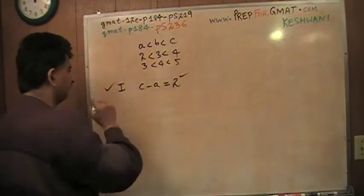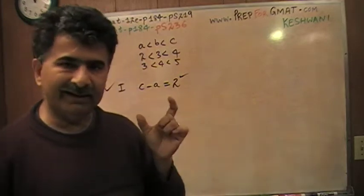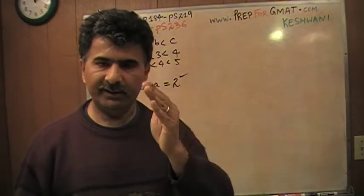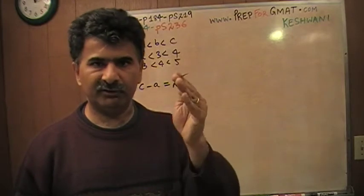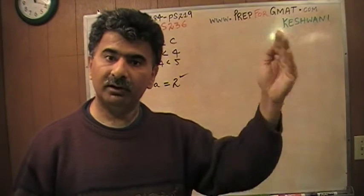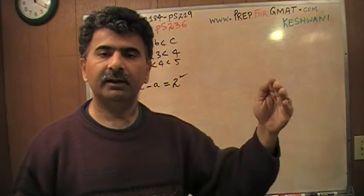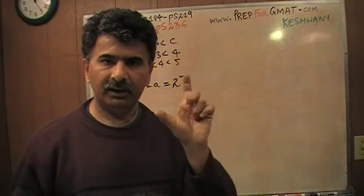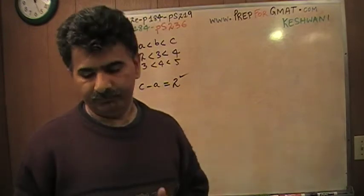Statement number 1 is correct. Of course, the difference between C and A has to be true, because there are three consecutive numbers. So you start with any number, the next number is going to be one more than the first number, and the following number is going to be one more than the middle number, which is the same as saying that it is two more than the first number. Statement 1 is true.